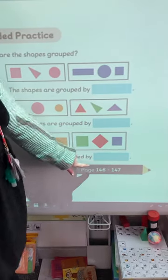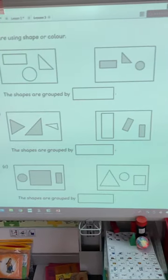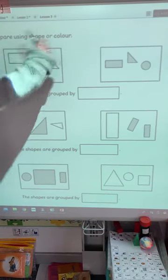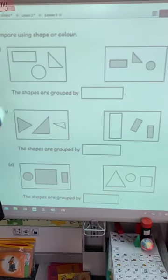And then we're going to move on to our book. So 146. And it looks like this. So it says, compare using shape or colour. So look how are these. How have they been grouped? Are they grouped by shape or by colour?